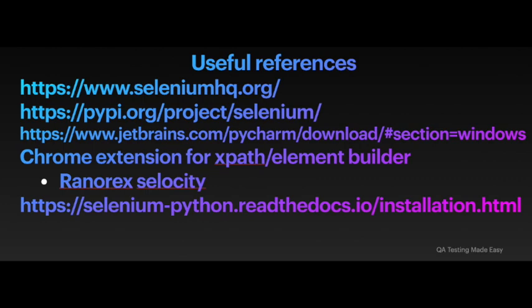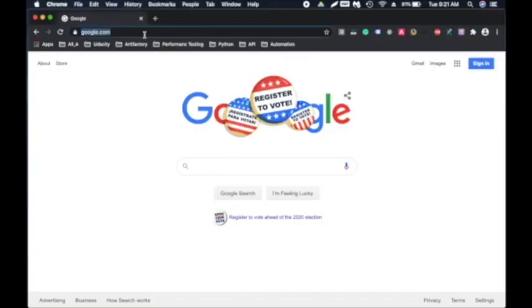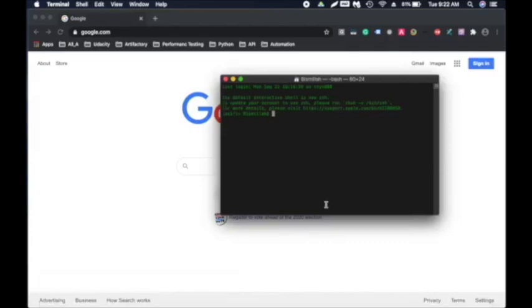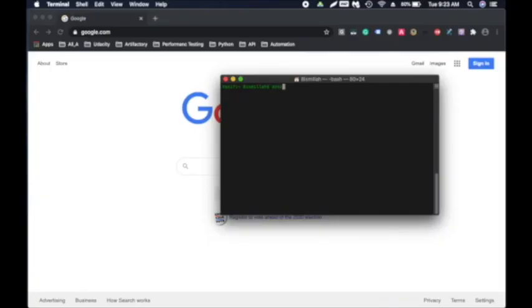Now we're going to install and set up Selenium and Python and run our first script. I'll also cover what is the best automation tool and which programming language you should learn. To run our automation script we'll need: Python 3 and up, the Selenium client, a Chrome or other browser driver for Selenium, and an IDE — I'm going to use PyCharm. If you're familiar with Eclipse you can install the Python plugin for it. First, open your terminal on Mac or Command Prompt on Windows. Check if Python is installed by typing 'python --version'.